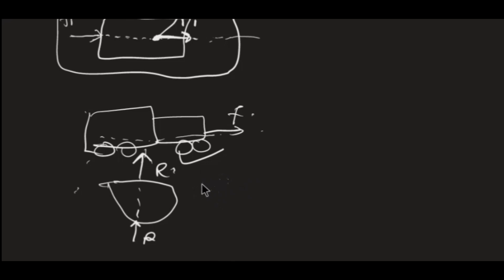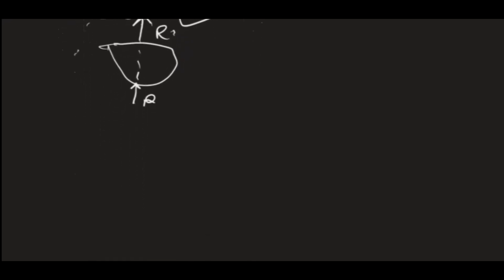That is the principle of force transmissibility. It helps us to change the position of a force, provided it stays on the same line of action, to make simplification and handling of complex systems easier. The two forces are called equivalent forces since they act on the same line of action with the same magnitude and direction. Thank you for watching — please like, subscribe, and share.